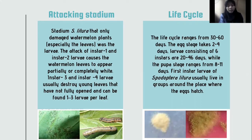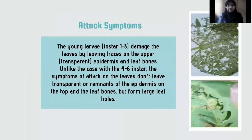First instar larvae of Spodoptera littoralis usually live in groups around the place where the eggs hatch. The young larvae in instar 1 to 3 damage the leaf by leaving the upper transparent epidermis and leaf veins intact. Unlike instar 4 to 6, which make large holes in the leaves, leaving only remnants of the epidermis on top and the leaf veins.